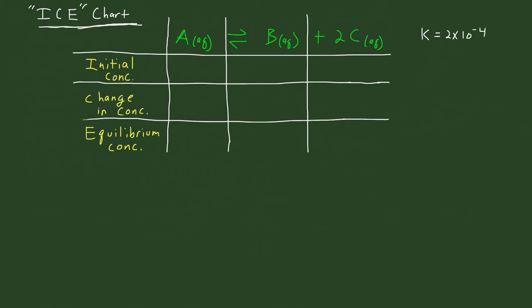So there's this thing called the ICE chart, which you see in front of you — it is basically bookkeeping. What ICE stands for: the I stands for initial concentration, the C stands for changing concentration, and the E stands for the equilibrium concentration. All the concentrations in this table are in molar, which is moles per liter.